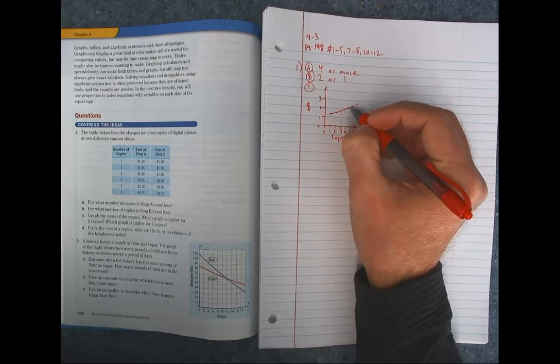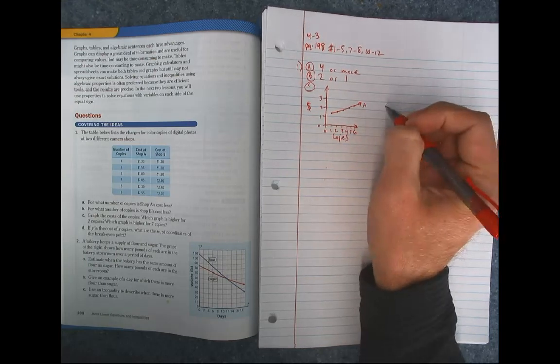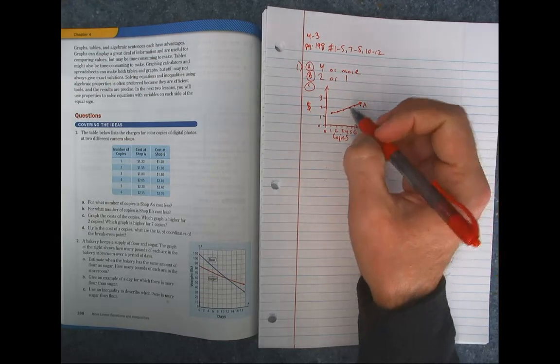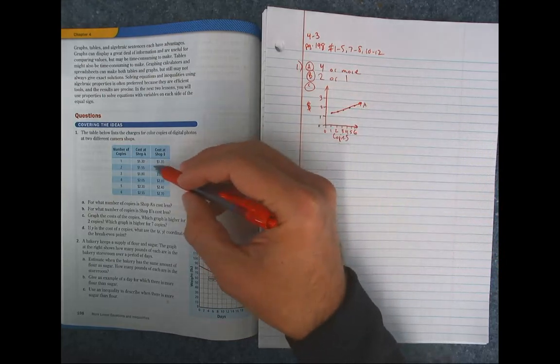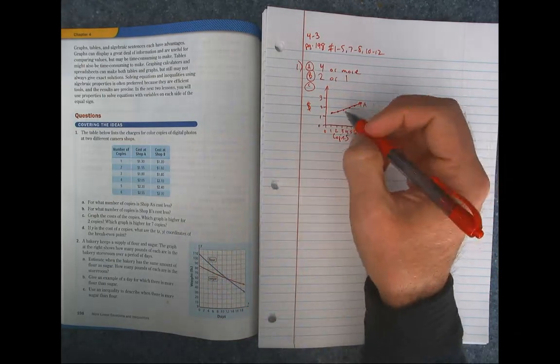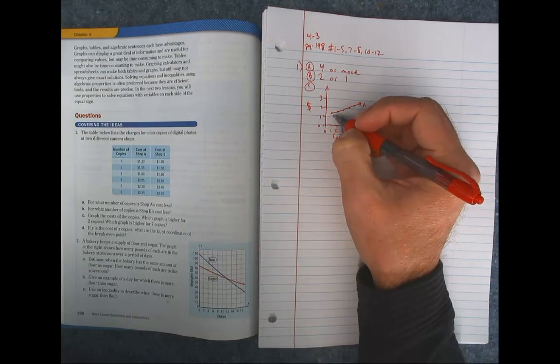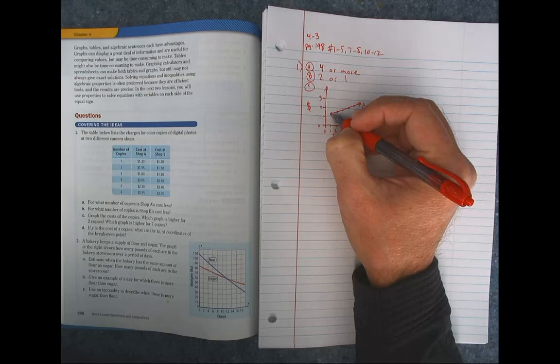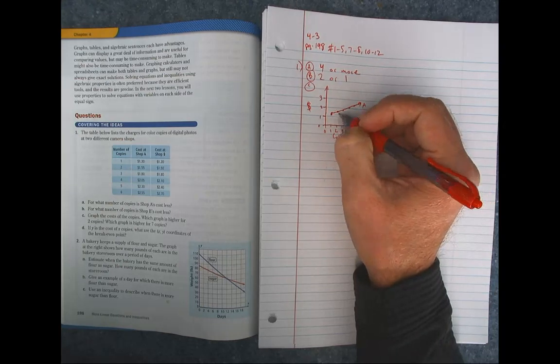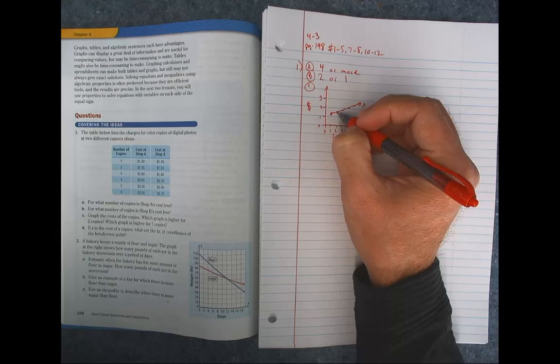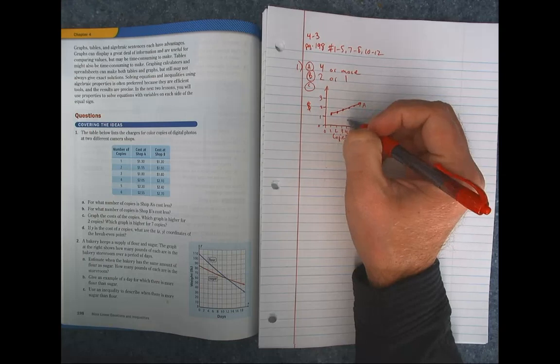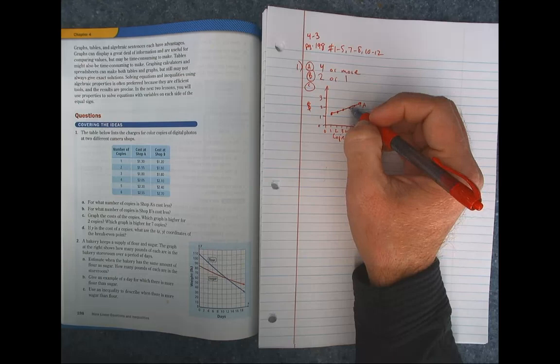So this line here, fairly straight, this is A. And B, we just need to be careful. Make sure we stay under it where it needs to be under and over where it's over and then cross where it crosses. So for 1 copy, it's $1.20. Well, A is $1.30, so I've got to keep it underneath of it. For 2, it's at $50. A is at $55, so just under it. 3, they're in the same spot, $80.